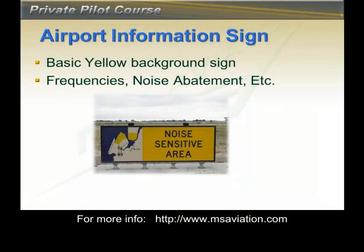Airport information signs are usually yellow with black letters. They have instructions or recommendations like how to depart the airport to reduce noise, frequencies to use, and anything else that would need to be communicated to the pilot. These signs are usually located near the beginning of the runway.